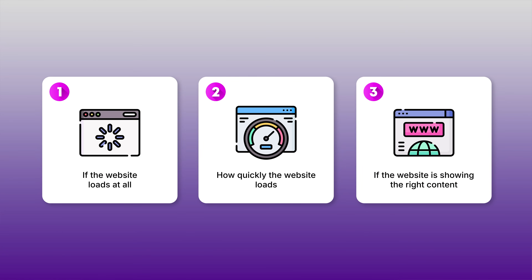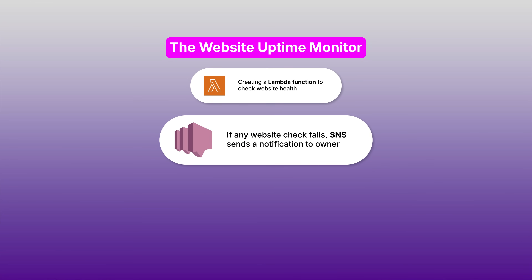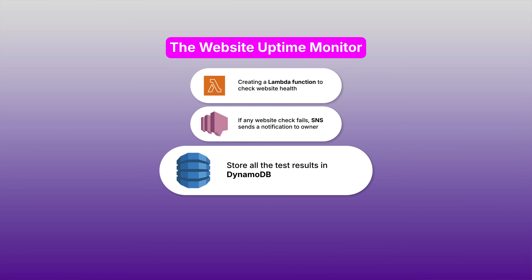Second, it checks how quickly the page loads — even if your website is technically up, if it takes 30 seconds to load, customers will leave. Third, it checks if the website is showing the right content, because sometimes websites load but show error messages or completely wrong content. When any of these checks fail, the Lambda function immediately triggers an SNS notification. Within seconds, the business owner gets an email and text message saying exactly what's gone wrong. All test results are stored in DynamoDB, which is AWS's fast database service. Every time our Lambda function checks the website, it records the timestamp, response time, success or failure, and any error message.